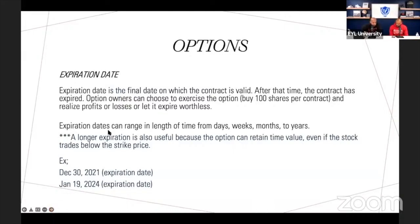Expiration dates can range from days to weeks to months to years. We like to go out on leaps — having as much time as possible for our positions to have their volatility, their ups and downs through news cycles. Right now with Omicron there are pullbacks, but we're in positions two to three years out, giving us time to correct and appreciate. The longer the expiration, the more the asset retains time value even if the stock trades below the strike price.